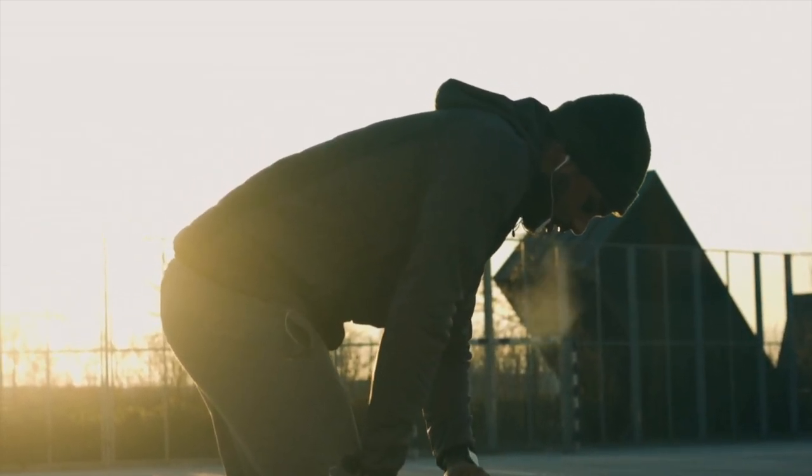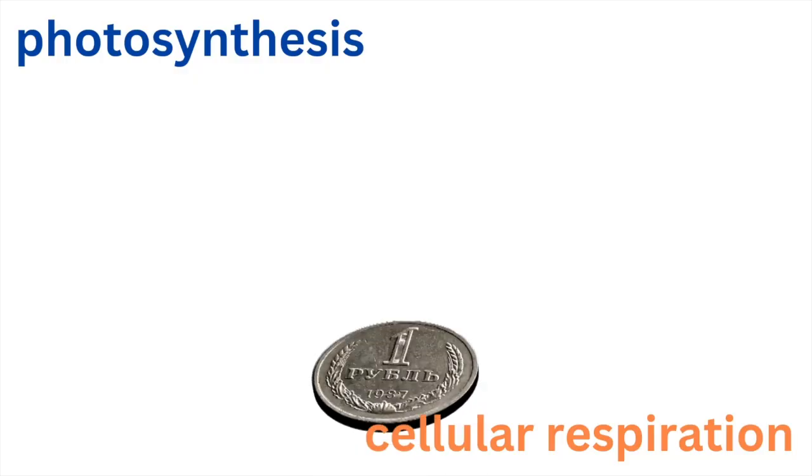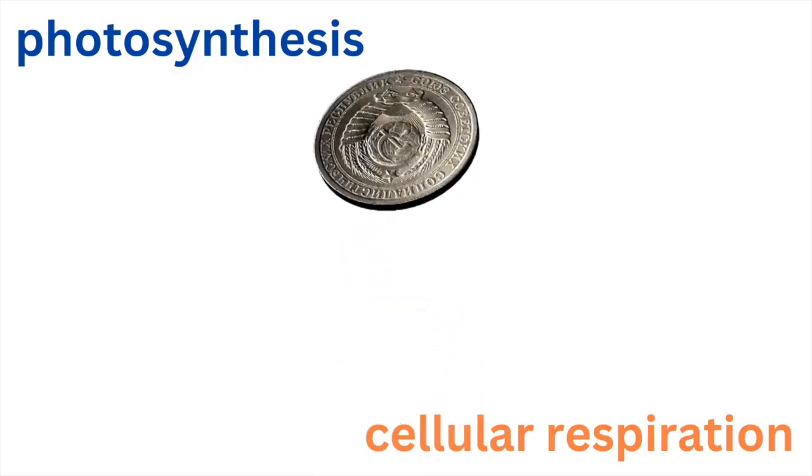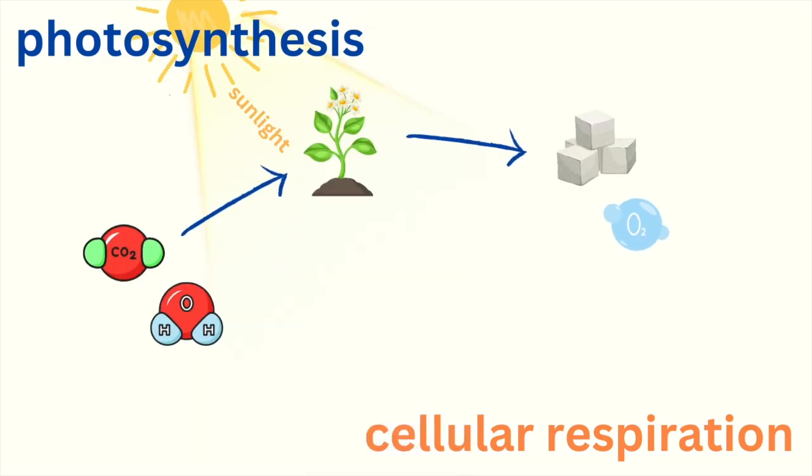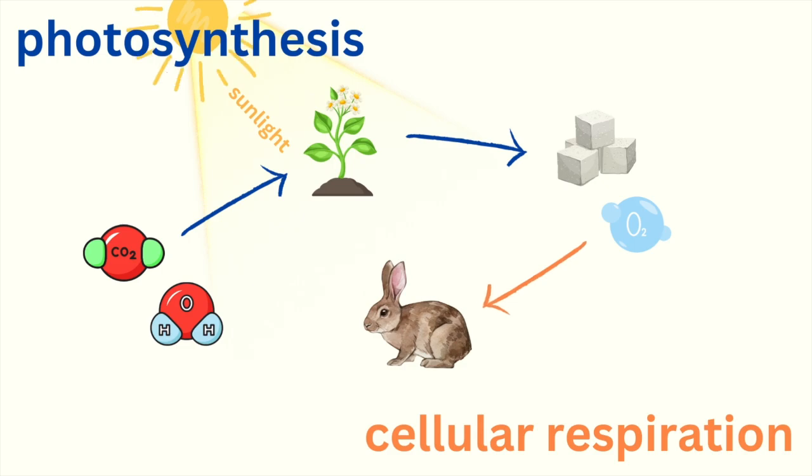Here's where it all connects. Photosynthesis and cellular respiration are like two sides of the same coin. In photosynthesis, plants take in carbon dioxide and water to make glucose and oxygen. In cellular respiration, animals and plants too take that glucose and oxygen, break them down to release energy, and produce carbon dioxide and water.